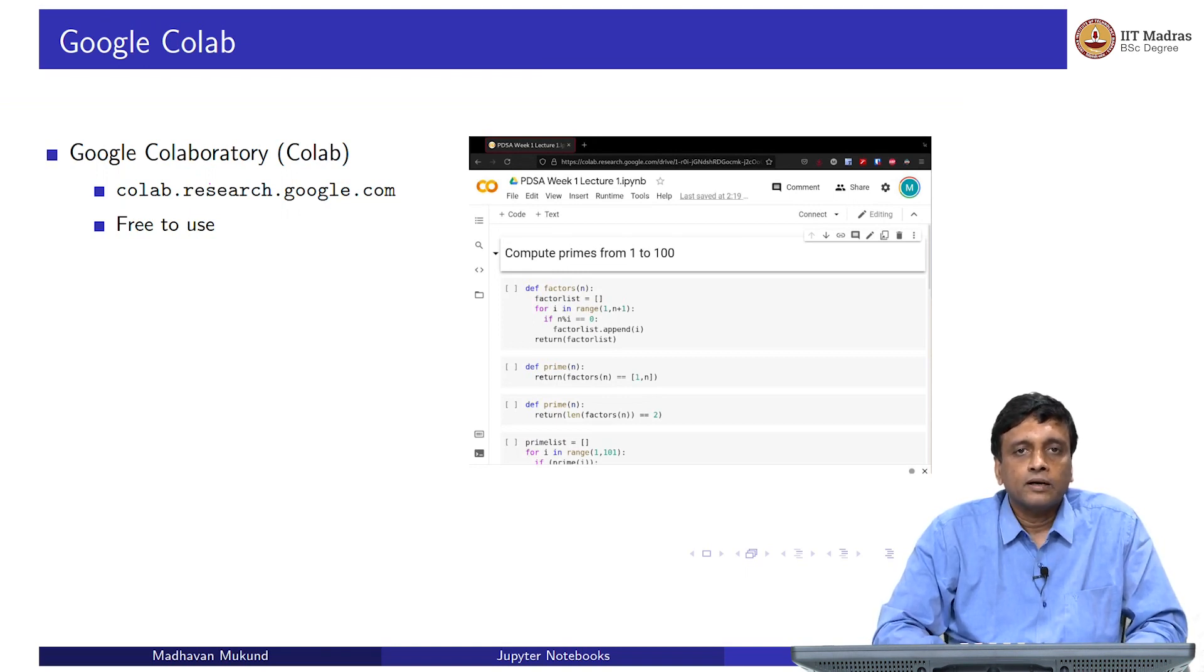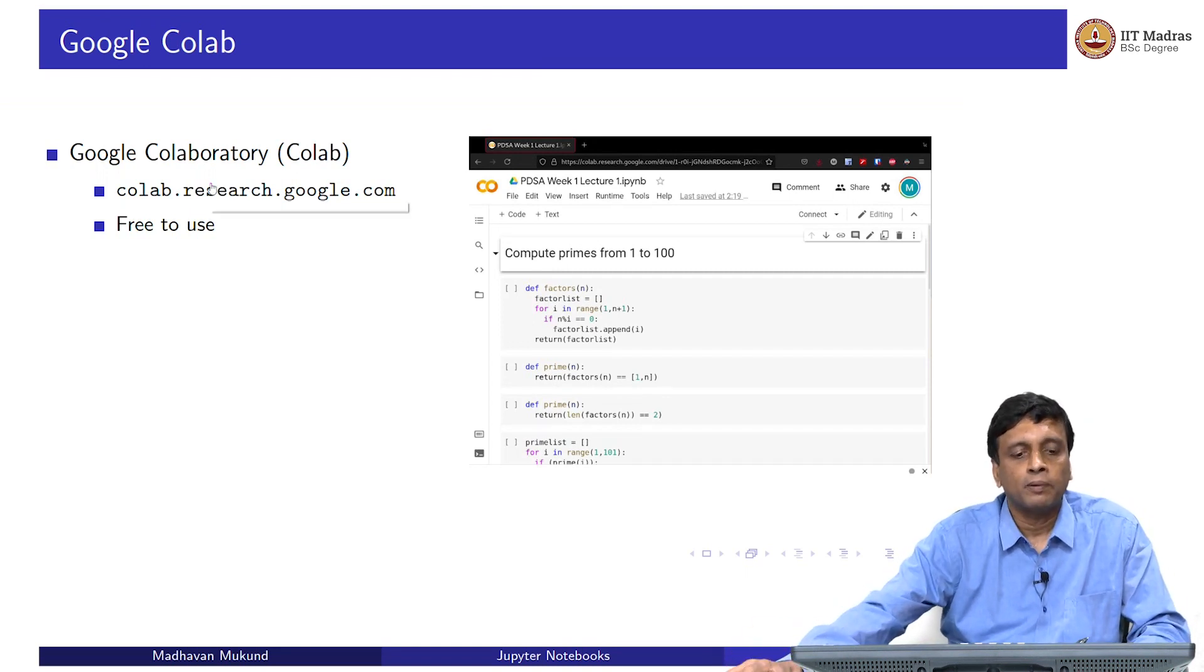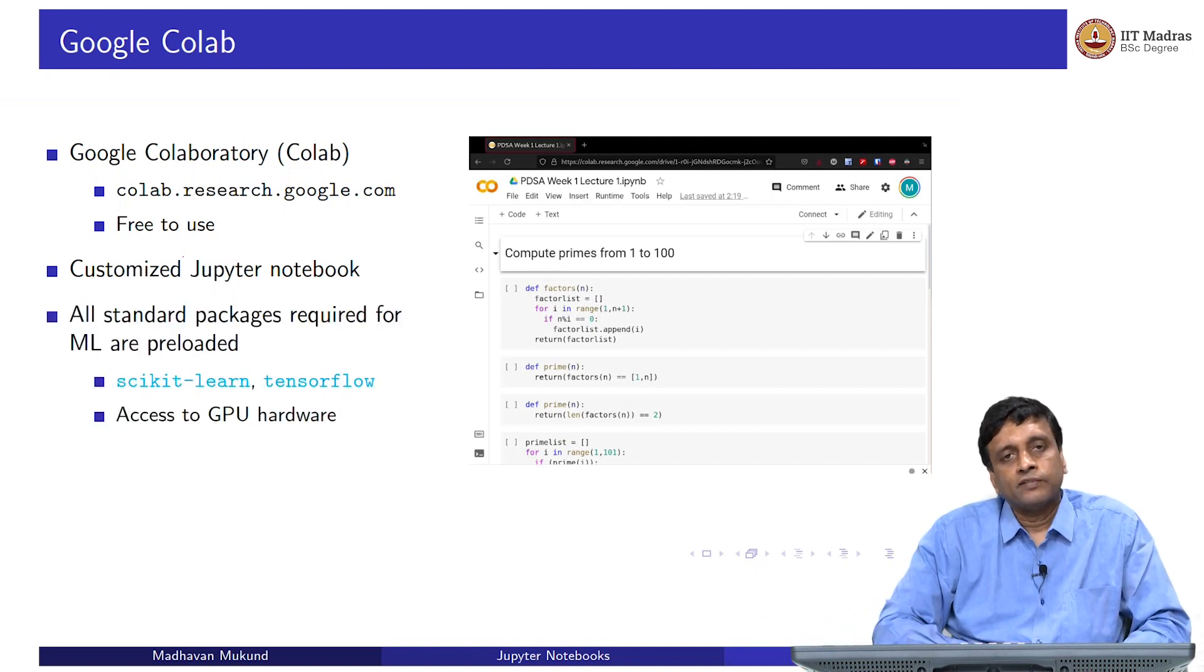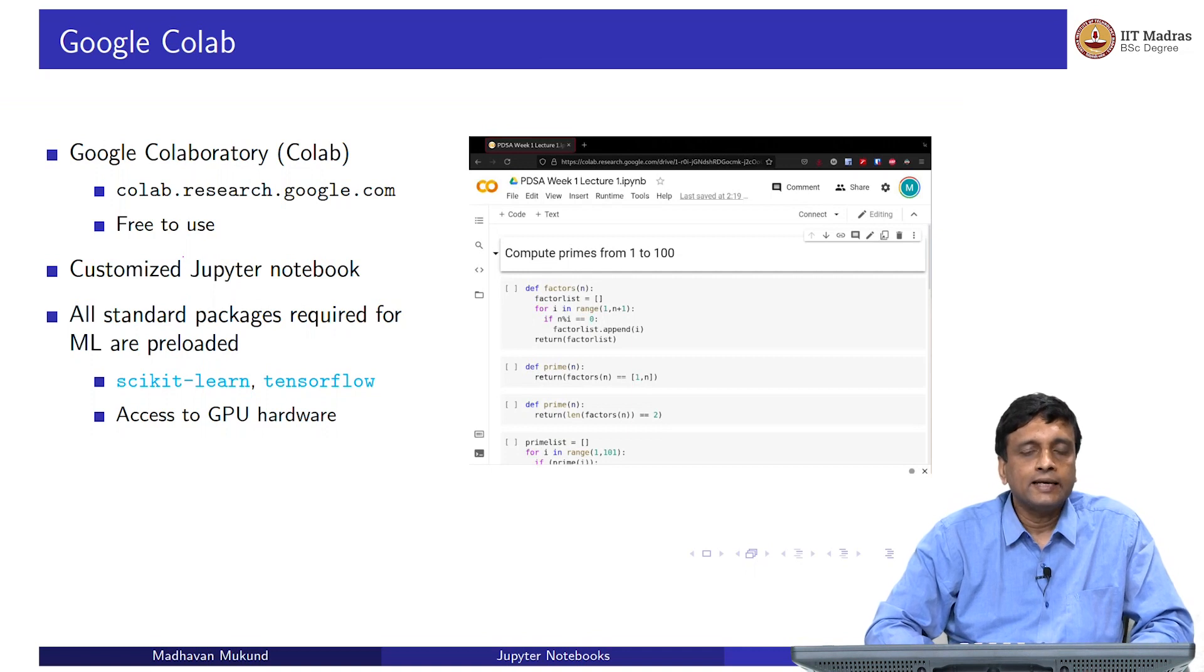We, on the other hand, will be using a publicly available form of the Jupyter notebook, which is put up by Google in what is called CoLab, which is short for the CoLaboratory. colab.research.google.com leads you to an interface where you can create these notebooks and save them. And it is most importantly, free to use. This has a slightly different look and feel from the Jupyter notebook that you would install on your own system. But essentially, it is the same broad structure, which has been customized by Google for their internal use, and then released for public use. It is a customized Jupyter notebook.